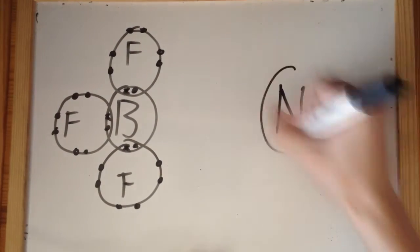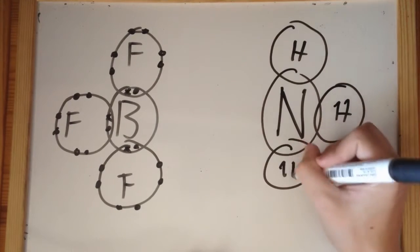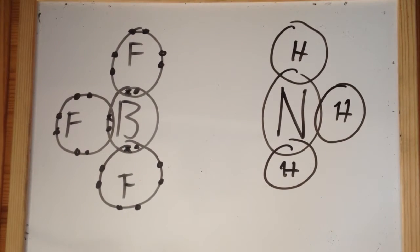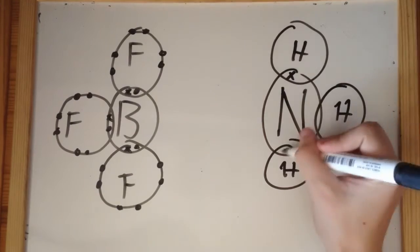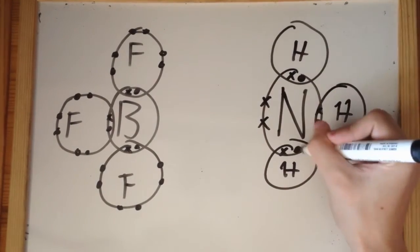In order to complete a noble gas structure, boron trifluoride needs to bond with another molecule. Ammonia has the formula NH3 and maintains a noble gas structure, however the nitrogen atom has two spare electrons that it is doing nothing with.